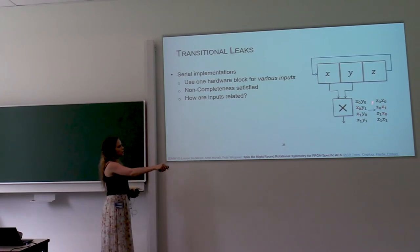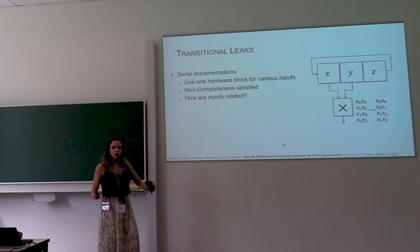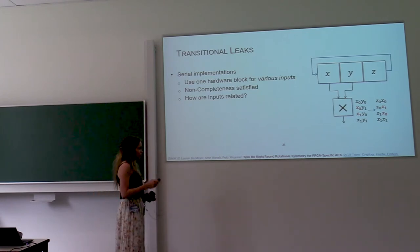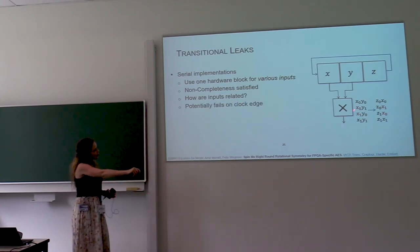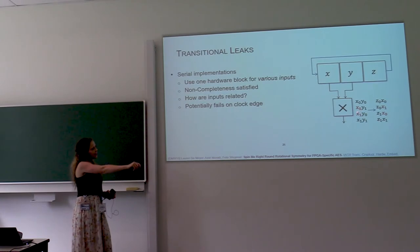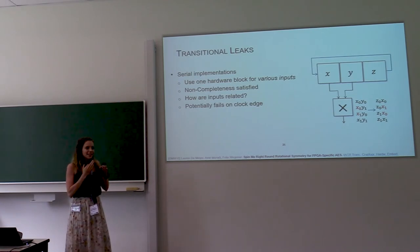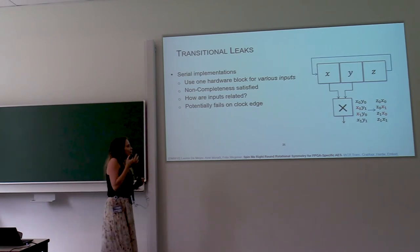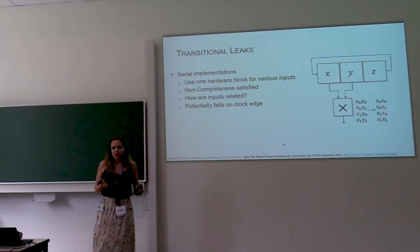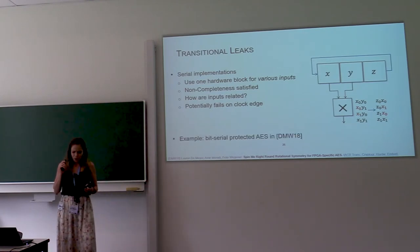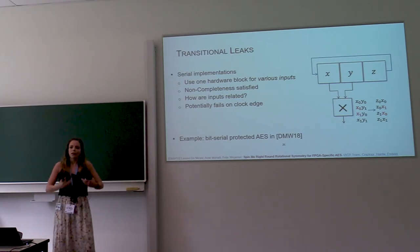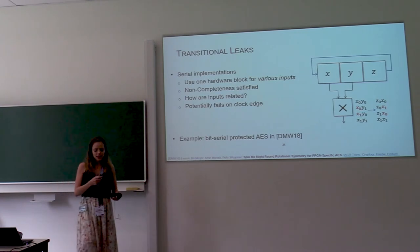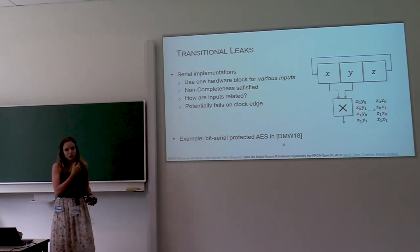But then if the state rotates, then we compute instead of X times Y, we compute Z times X, and then we compute these cross-products. There is still nothing wrong with those cross-products. But if you look at the transition from this cycle to that cycle, then we see that in these two cross-products, in transition, we have both X0 and X1. So that means that in the transition from one clock cycle to the next, non-completeness actually fails. So this happened to us when we were working on a bit-serial protected AES, and it took us quite a while to realize why our implementation was leaking. And in the end, we realized that it was a problem similar to this one.